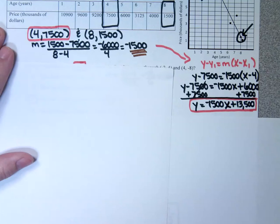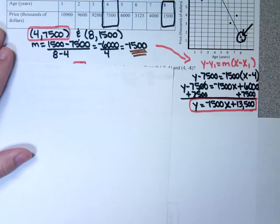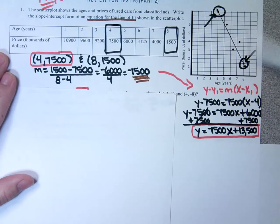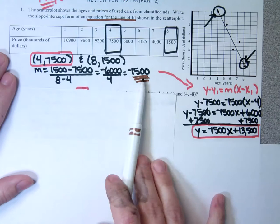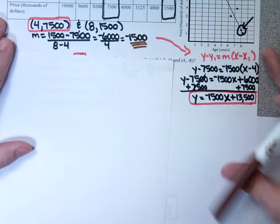We have seen this sort of problem a few times now — it was on a quiz, it's been on a test, here it is again on a review, so be prepared to see it on this test as well. Remember: start by using two points on the line, use your table so you know exactly what those points are, find your slope, pick a point, put it in point-slope form and go from there.